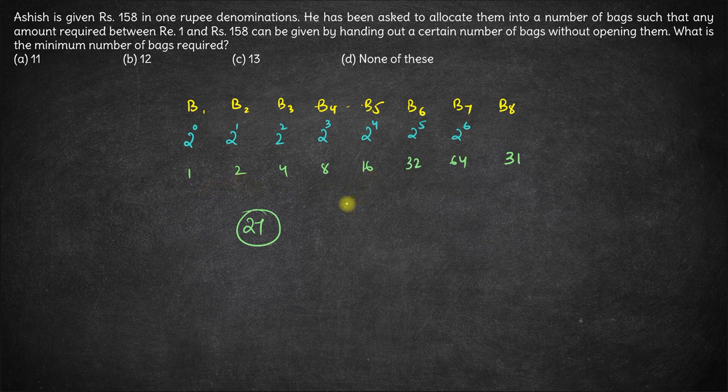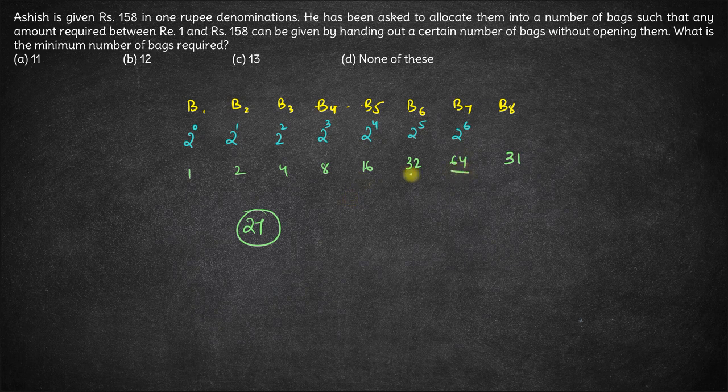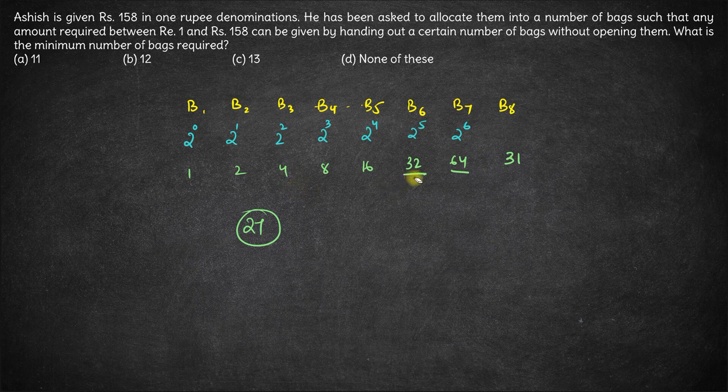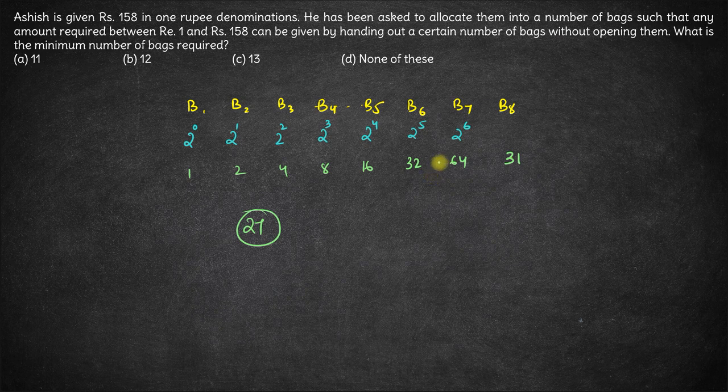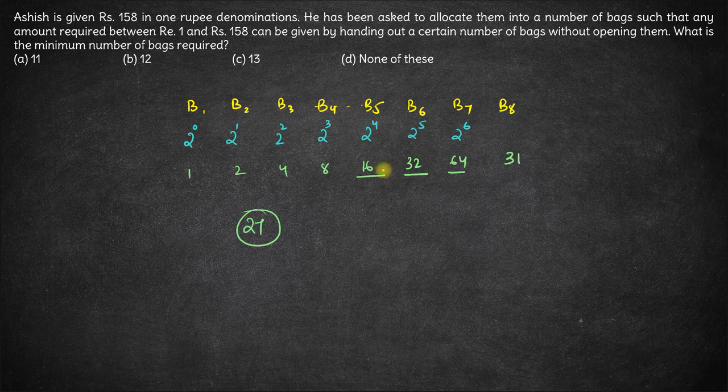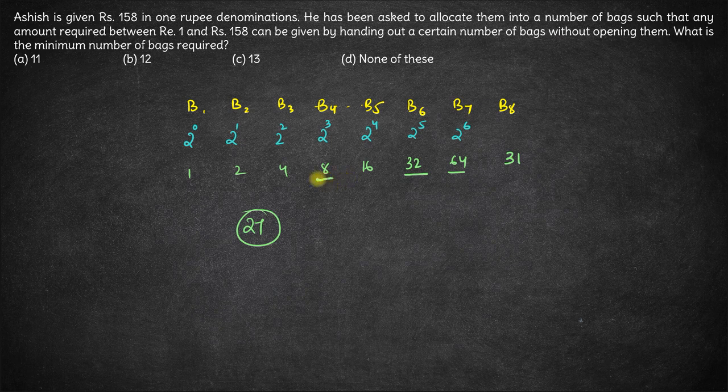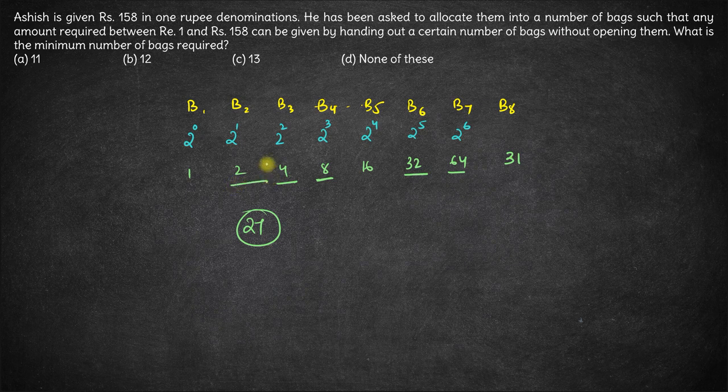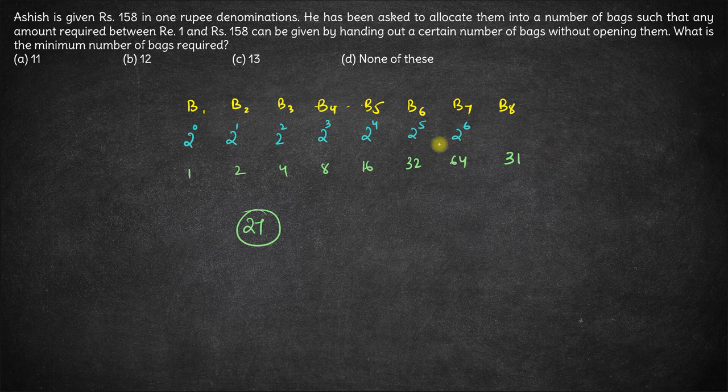Now if you want to give 100 coins, 100 coins can be given as 64 plus 32 is 96, 96 plus 4 is 100. If you want to give 110 coins, 110 is 64 plus 32 is 96. 96 plus 16 will become more than 110, so let's leave it. 96 plus 8 is 104, 104 plus 4 is 108 plus 2 is 110.